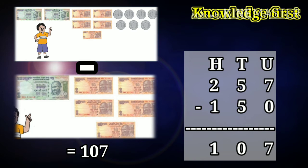Friends, we should start subtraction from unit place. 7 minus 0 is equal to 7. Then tens place, 5 minus 5 is equal to 0. After that, hundreds place, 2 minus 1 is equal to 1. Answer is 107.